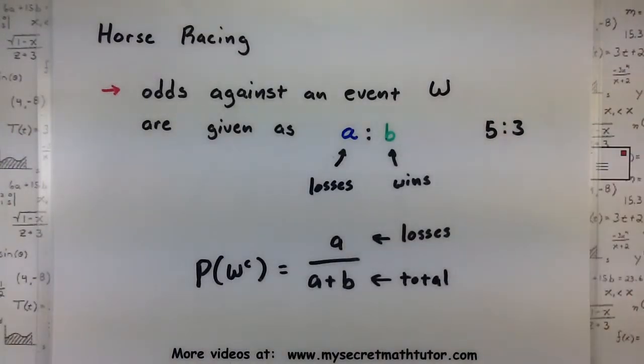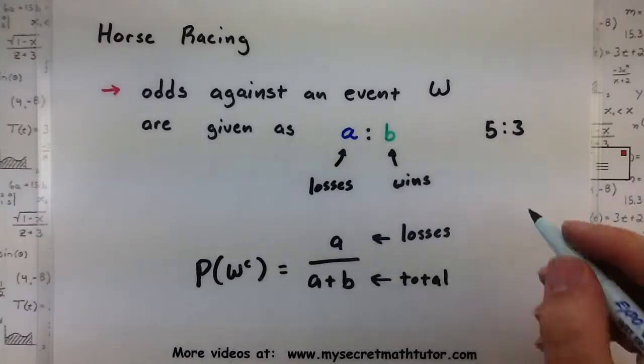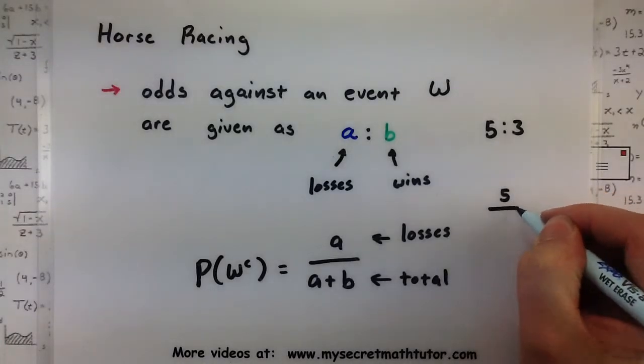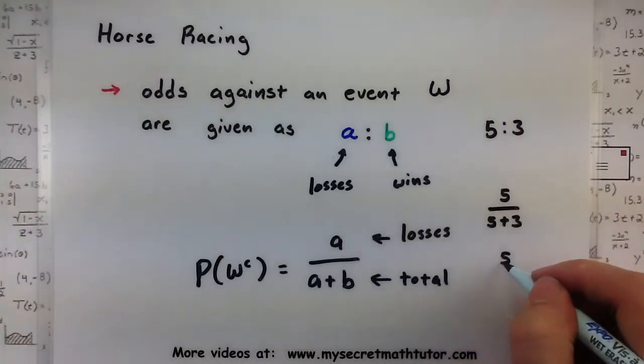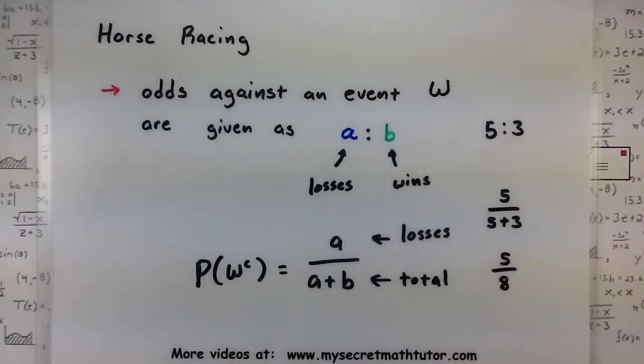So what that means is that I will lose five times and win three times. So if I wanted to compute the probability of the horse not winning, I'd go five out of the total, five plus three, or five over eight. And that would be the probability of not winning.